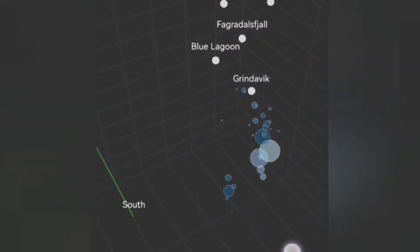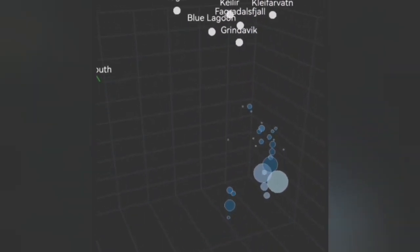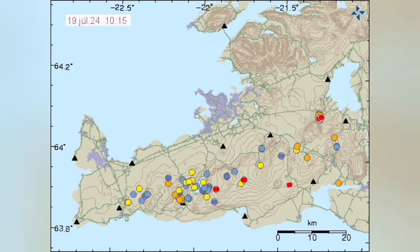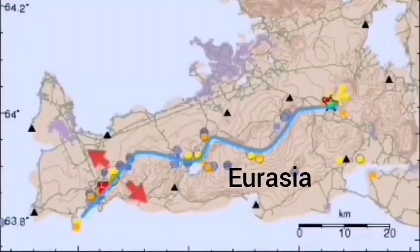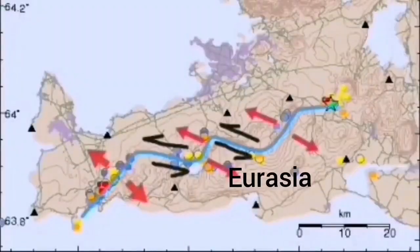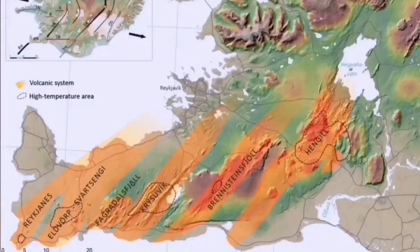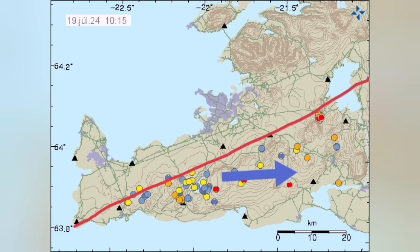This is the contact point of the Eurasian and American plates. The Eurasian plate is moving eastward, and as it moves, the transform faults transfer the movement toward the east. This is inside the Eurasian boundary, which you can see marked by the red line — this is where the earthquake and the eruptions are happening.